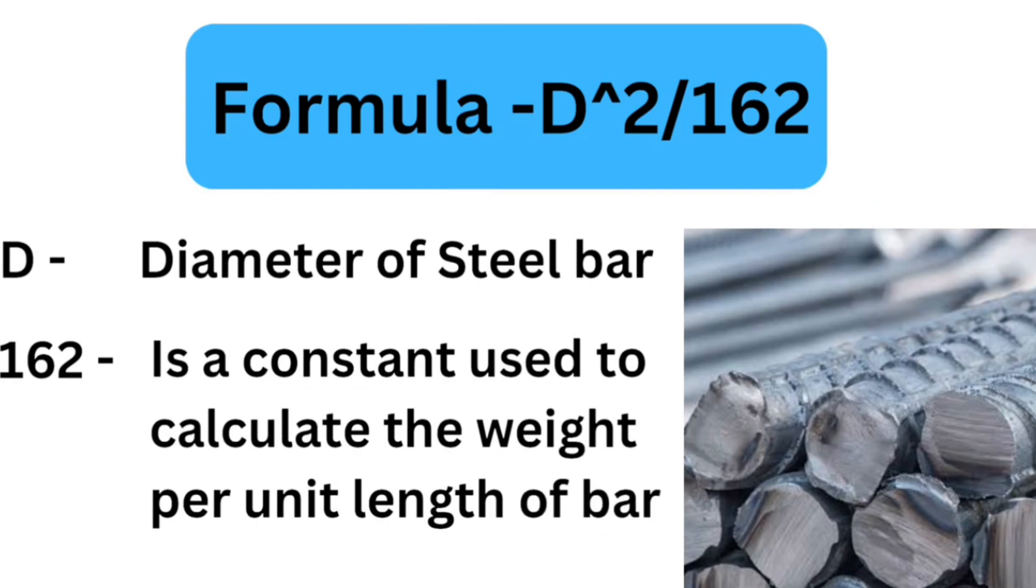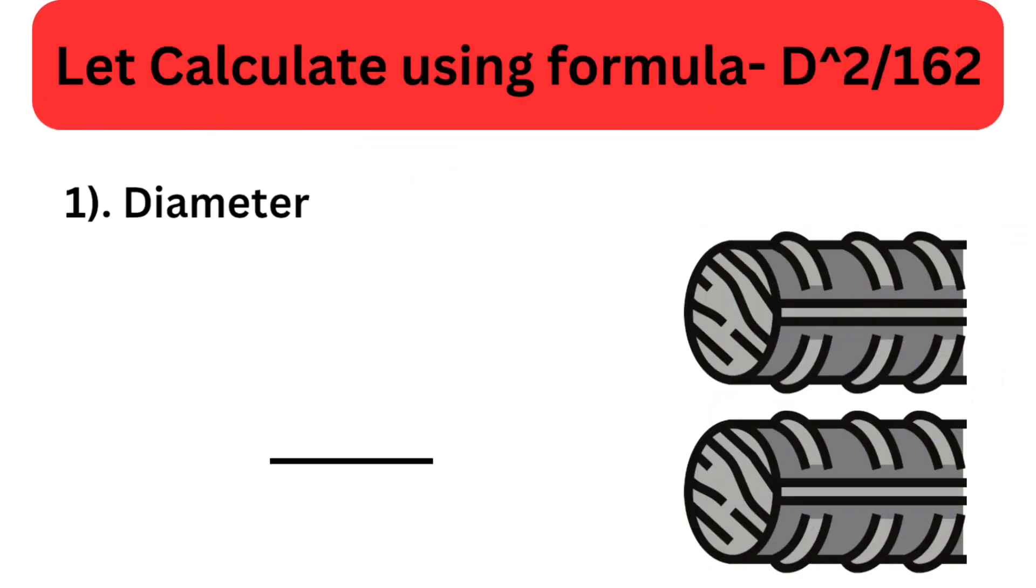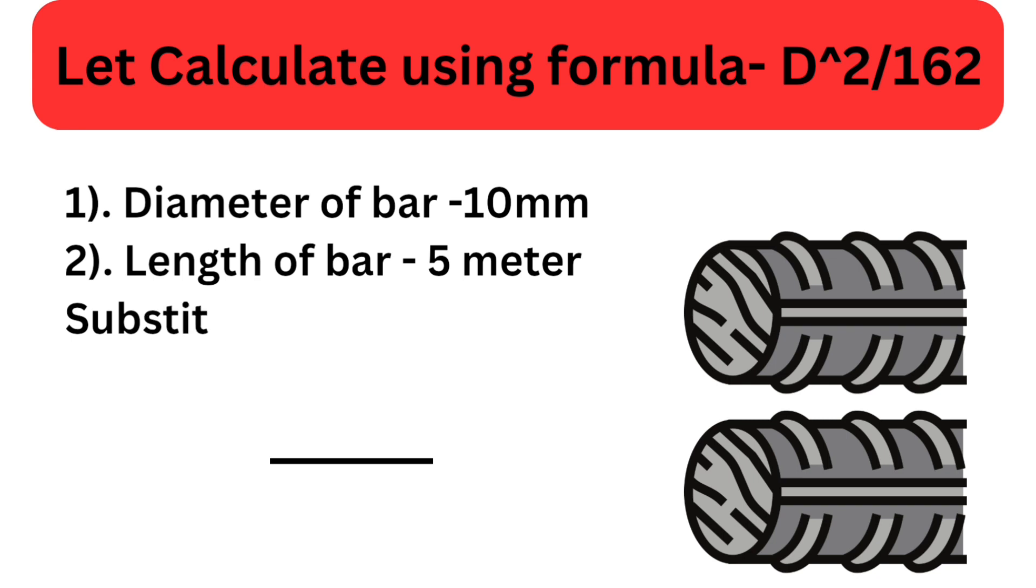By plugging in the diameter into this formula, we can quickly determine the weight per meter. Now, let's calculate the weight of a steel reinforcement bar using the formula: diameter squared divided by 162. I will demonstrate with an example.